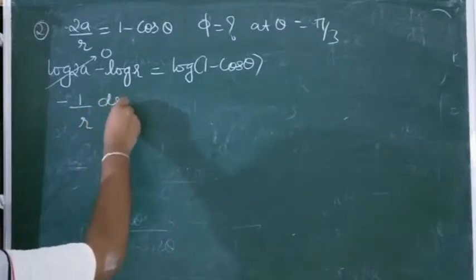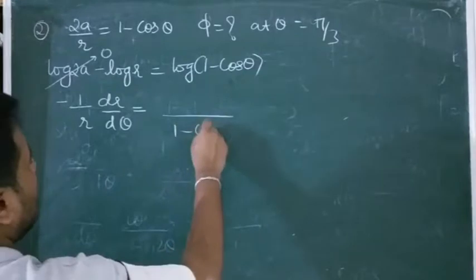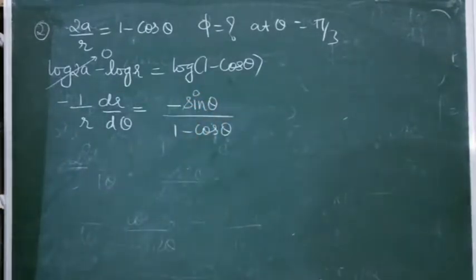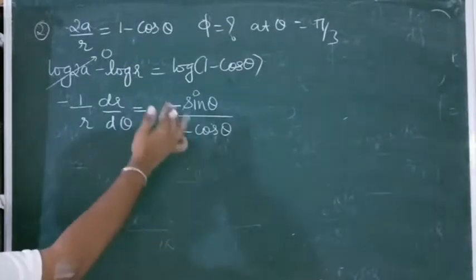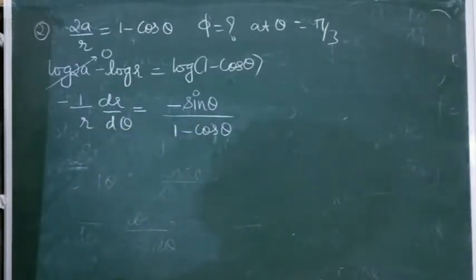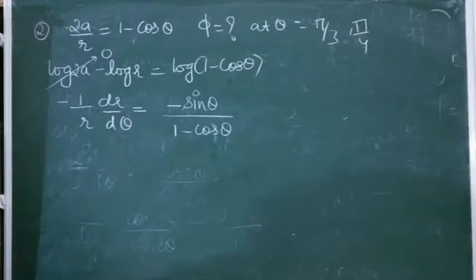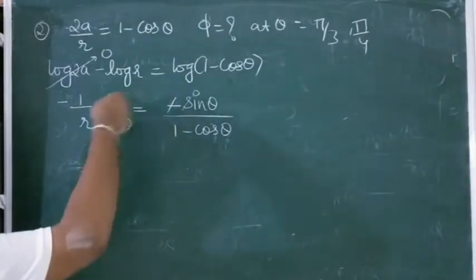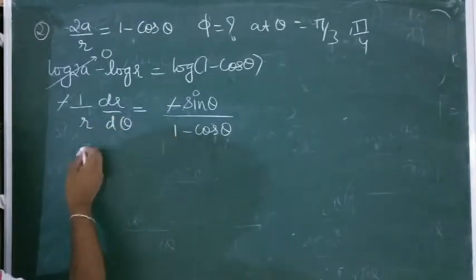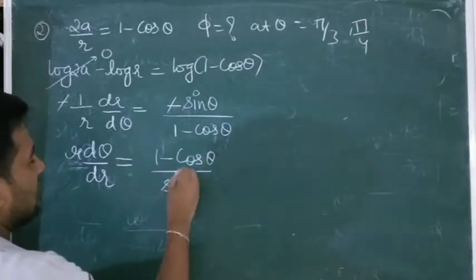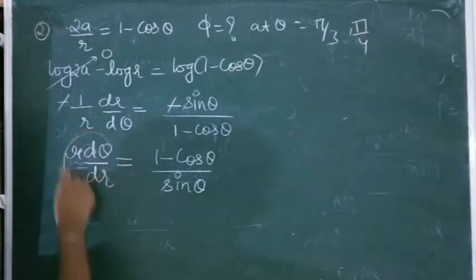Differentiating: -(1/r)·dr/dθ = sinθ/(1 - cosθ), since the differentiation of cosθ is -sinθ. After simplification, I get (1/r)·dr/dθ = -sinθ/(1 - cosθ). Reciprocating: r·dθ/dr = (1 - cosθ)/sinθ. This is tan φ, but it's not yet in tan form.